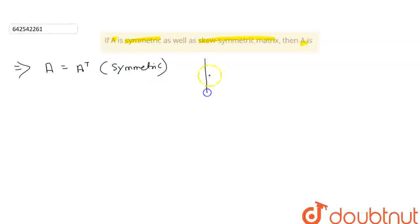And if A is a skew-symmetric matrix, which means A is equal to minus of A transpose. This is the condition for skew-symmetric matrix. Okay, this is the condition. Now...